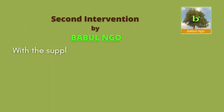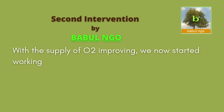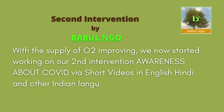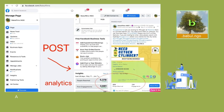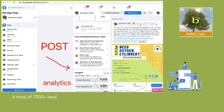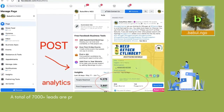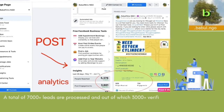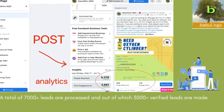With the supply of oxygen improving, we now started working on our second intervention — awareness about COVID via short videos in English, Hindi and other Indian languages. A total of 7,000 plus leads are processed, out of which 3,000 plus verified leads are made into posts.